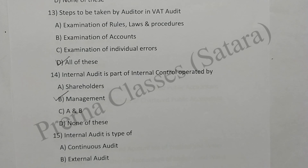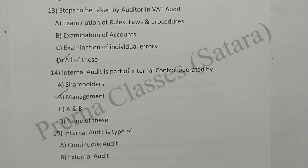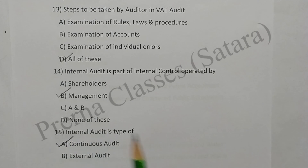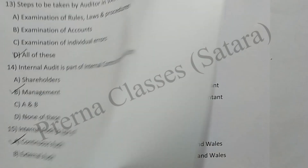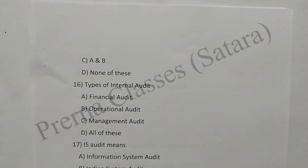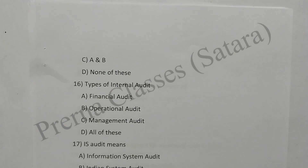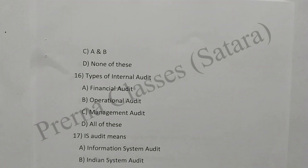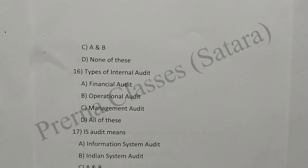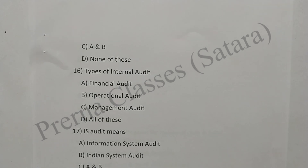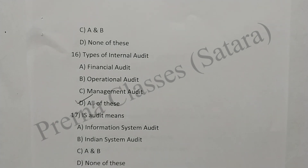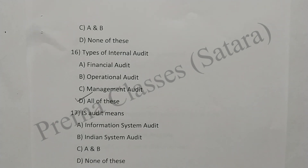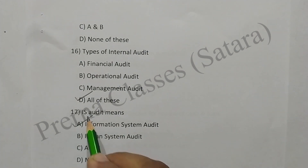Question 15: Internal audit is a type of continuous audit. Option A is correct. Question 16: Types of internal audit are finance audit, operation audit, management audit, and all of these. Option D is correct. Question 17: IS audit means Information System audit. Option A is correct.